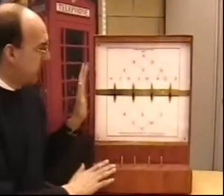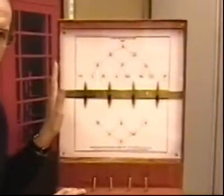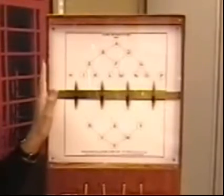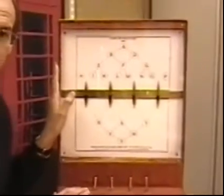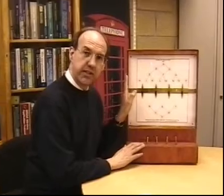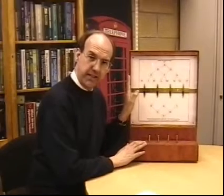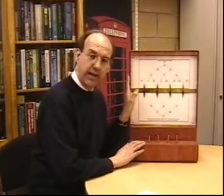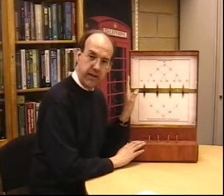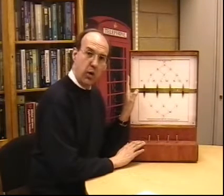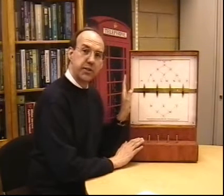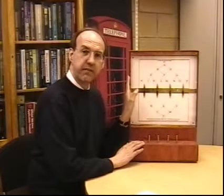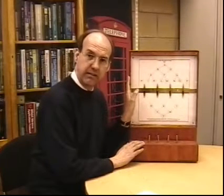But what did their system actually look like and how did it work? Well, this is a modern day replica of a Cook-Wheatstone Needle Telegraph. It uses the principles of electromagnetism, which says that if you pass a current through a coil of wire, it will generate a magnetic field. And what Cook and Wheatstone did was use that magnetic field to deflect a magnetised needle.